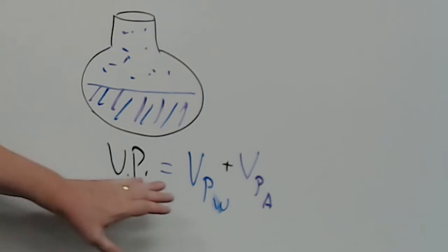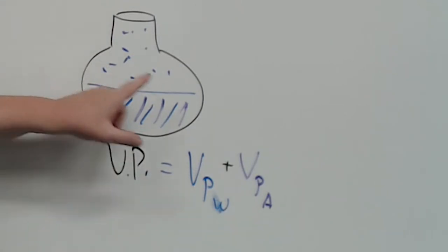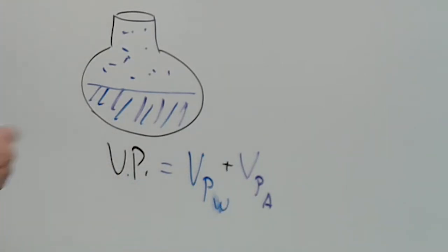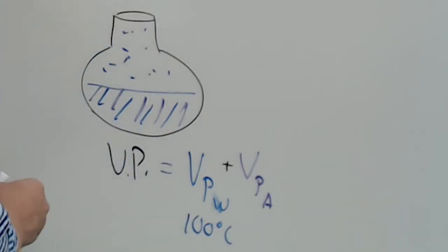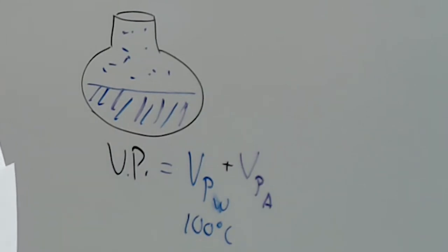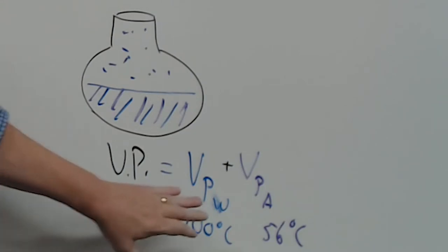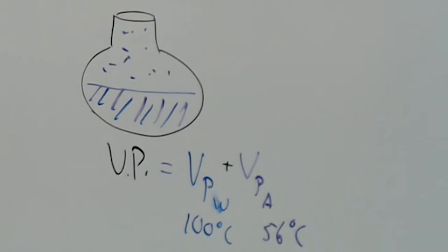If the two liquids had identical boiling points, their vapor pressures would be the same. However, in today's lab the boiling point of pure water is around 100 degrees at sea level atmospheric pressure, and the boiling point of acetone is 56 degrees at sea level. So when acetone is pure its boiling point is 56, and when water is pure its boiling point is 100 — again, at atmospheric pressure.